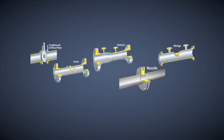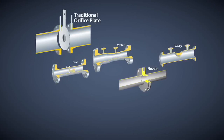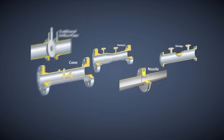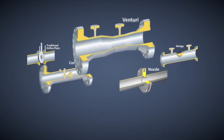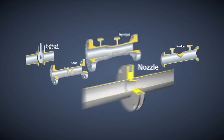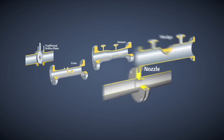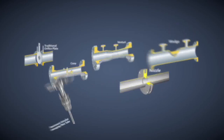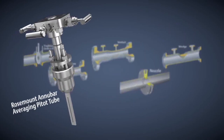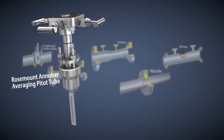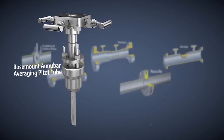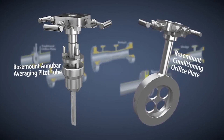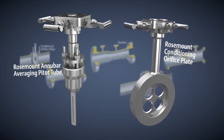There are many types of primary elements, including traditional orifice plate, cone, venturi, nozzle, wedge, Rosemount Annubar averaging pitot tube, and Rosemount conditioning orifice plate.